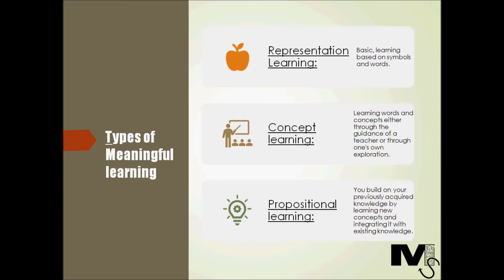Representation learning is basic elementary learning based on symbols and words. Children tend to learn words that have real objects associated with them and mean something to them. Examples include words like an apple, worm or milk. So these are words which children can associate with.